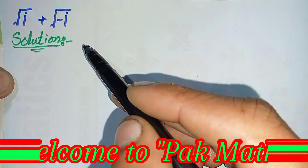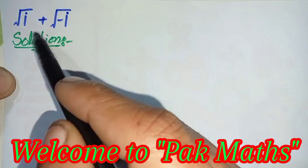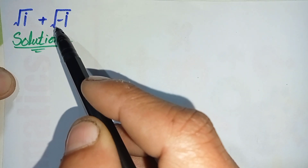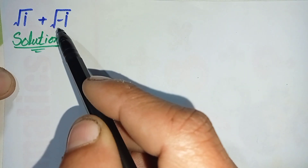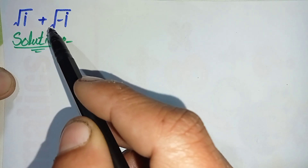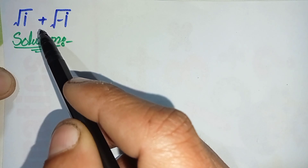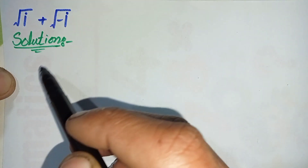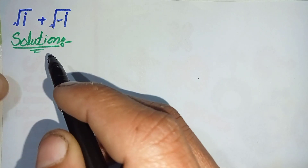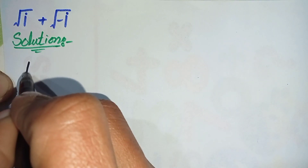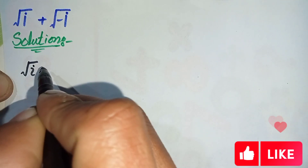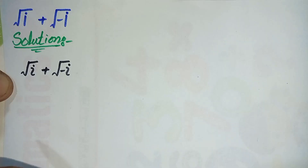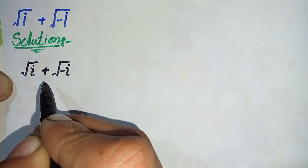Hello everyone, welcome to ParkMas. In this video I'm going to solve this interesting square root math problem: square root of i plus square root of minus i. Note that some people pronounce this symbol as 'i' and some as 'iota'. The question is square root of iota plus square root of minus iota.